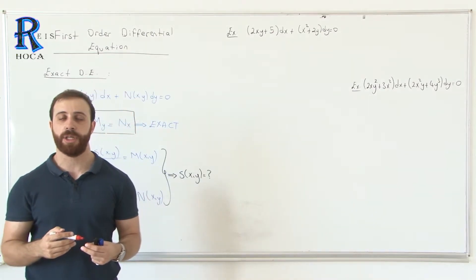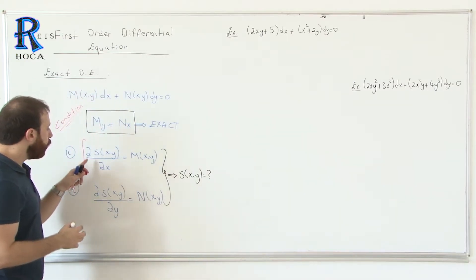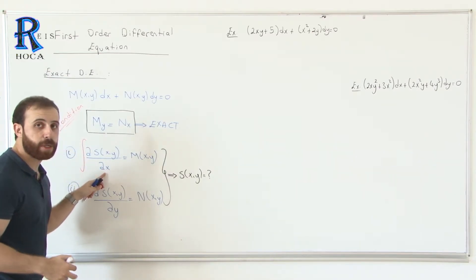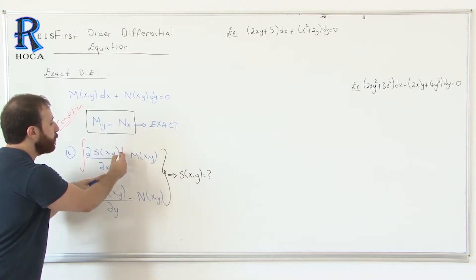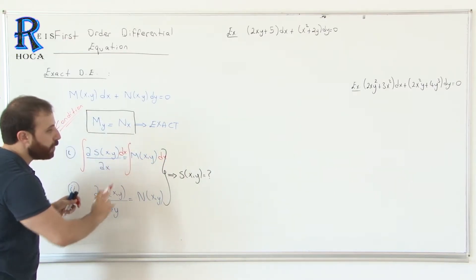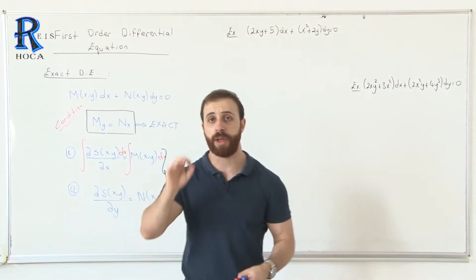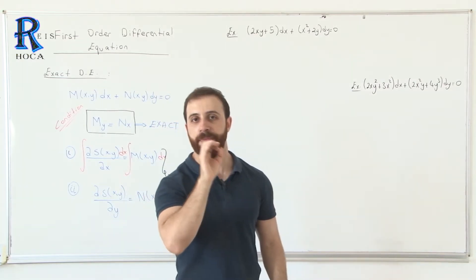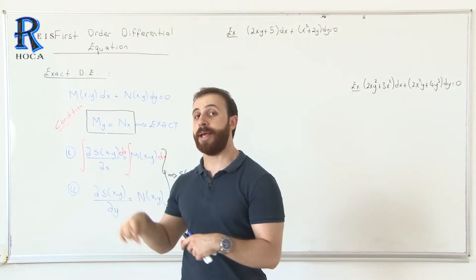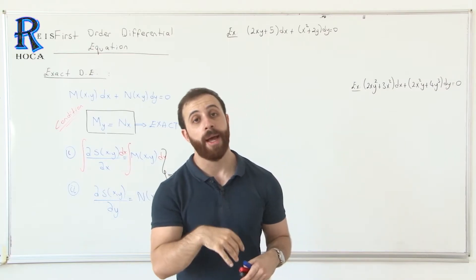There is also an alternative, easier method for exact differential equations, which I will teach you as well. We will take the integral — but as I said, to remove the derivative with respect to x, the integral must also be with respect to x, taken for both sides. After doing this, the derivative is removed and we find S. The equation must be in the format M dx + N dy, and if it is not already in that form, we must rearrange it before we start solving.